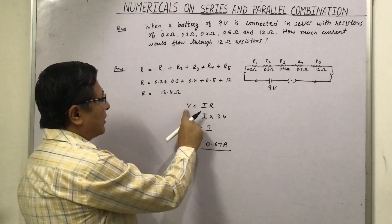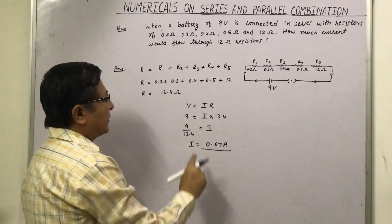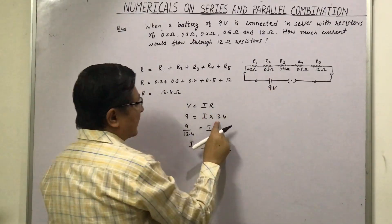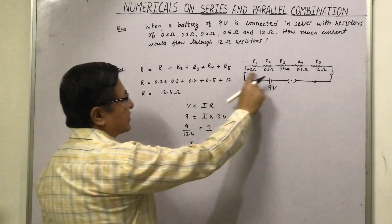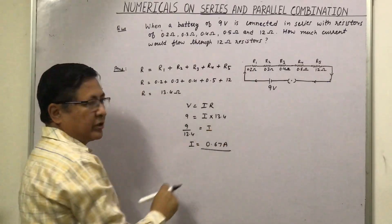what they do is, they write this formula V is equal to IR and in the resistance they write 12 ohm here. This is the wrong answer. We should have the total resistance, we have to calculate and that comes to 13.4.